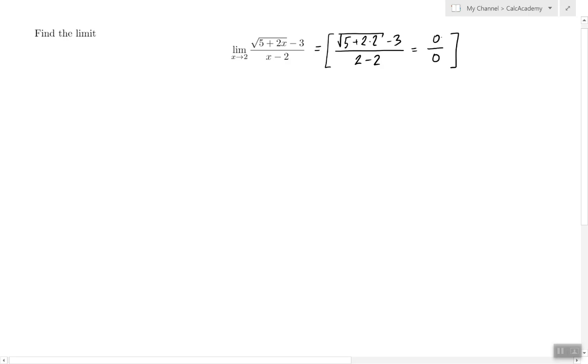When you have 0 over 0, that's one of the indeterminate forms which we don't know the answer right away, but this suggests that we could possibly have a removable discontinuity, which means that your function has a factor of x minus 2 somewhere in the numerator as well.